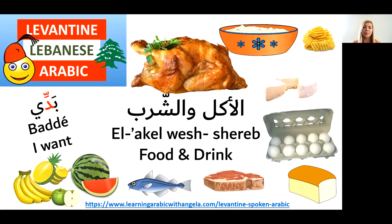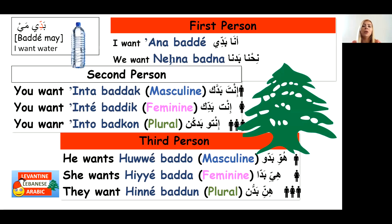When we want to use 'to want' in Lebanese, it's actually not a real verb — it's what we call a pseudo-verb, or something that behaves as a verb. So 'baddi' actually means 'it is within my liking that,' because it's composed of the 'ba' preposition and presumably came from 'biwidi.' It is within my liking that — so it's not actually a verb as in English or other languages.